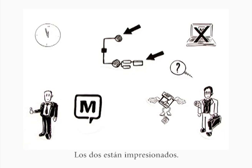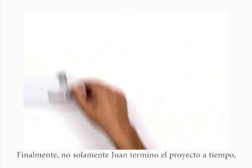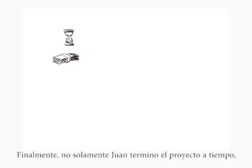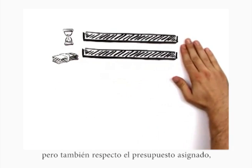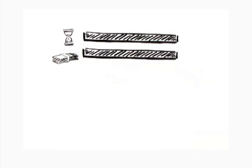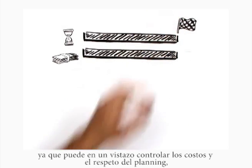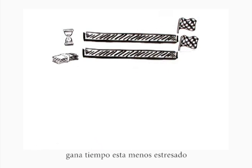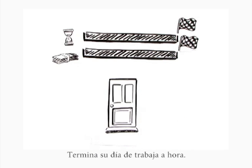Both are impressed. In the end, Paul not only delivers the reorganization project in time, but also in budget. The software enables him to monitor costs and progress at a glance, which saves both time and nerves. And he doesn't even have to do any overtime, but can leave work on time.